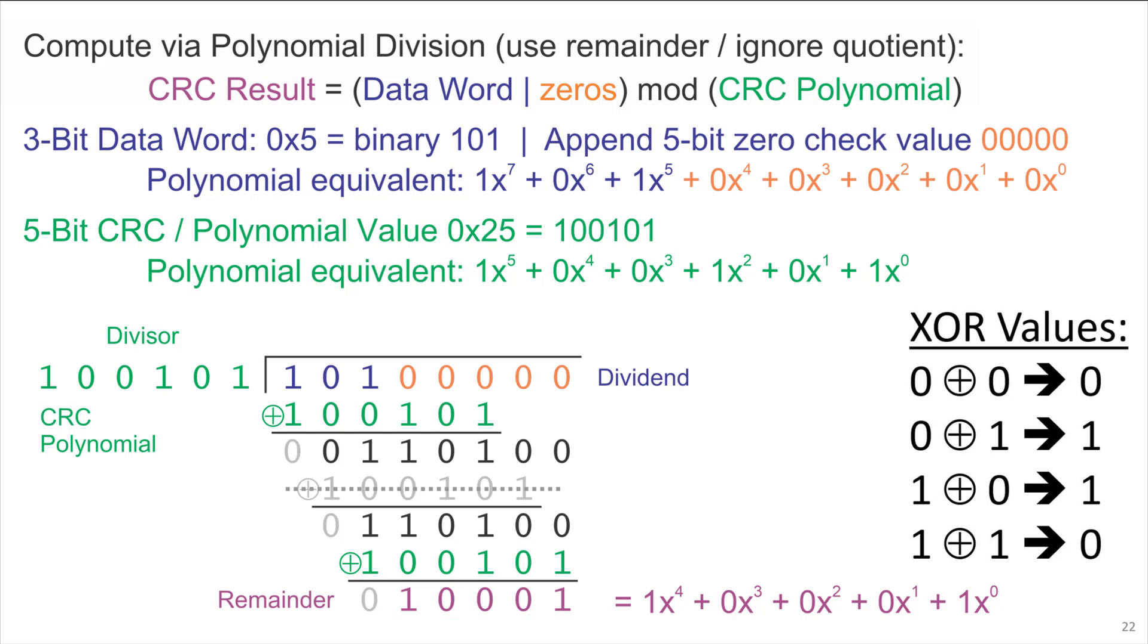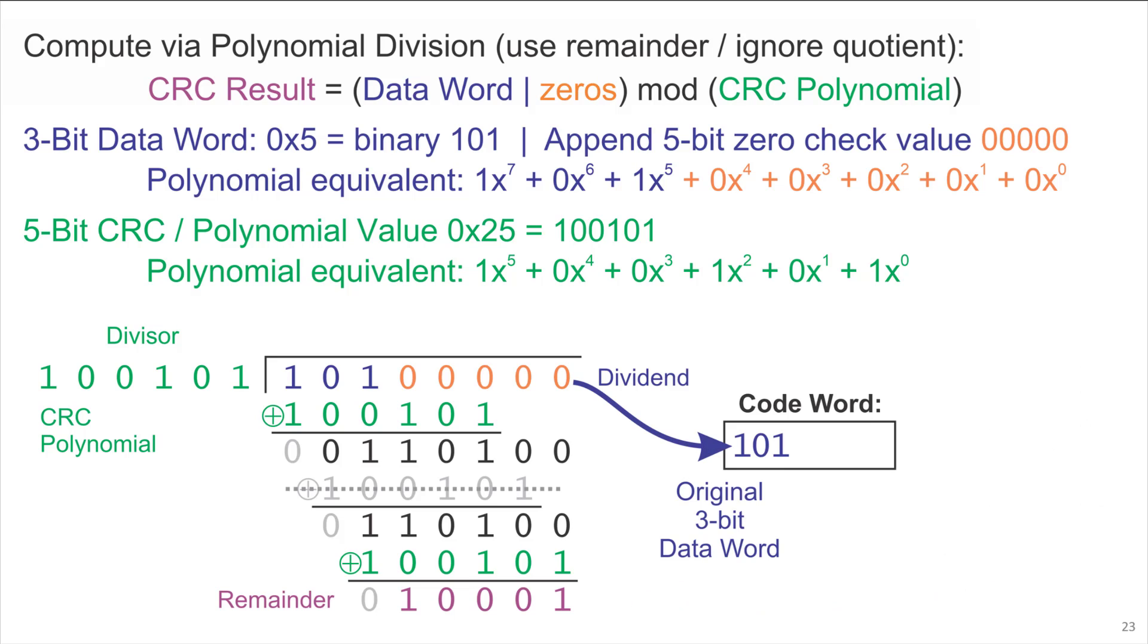There's nothing more to do with the division because we've used up all the bits, and so we go back and revisit the codeword. The top three bits of the codeword are the data word. That didn't change. That's 101.